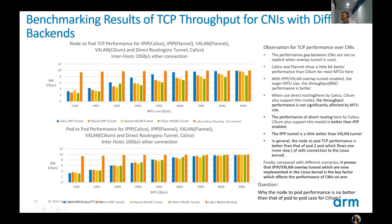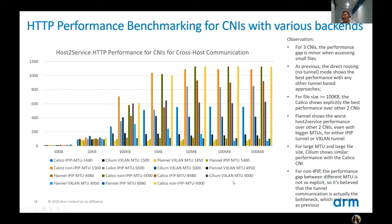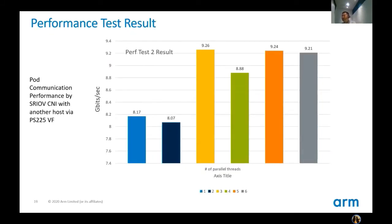As time is limited, I will not go into too much detail about the results — you can check the details in the slide. A very interesting result is our HTTP performance benchmarking for CNIs with various backends. Here is the HTTP host-to-service performance provided by Kubernetes for different CNIs on a 10 gigabit connection, showing near-line gigabit performance results with increasing threads used in the iPerf test.